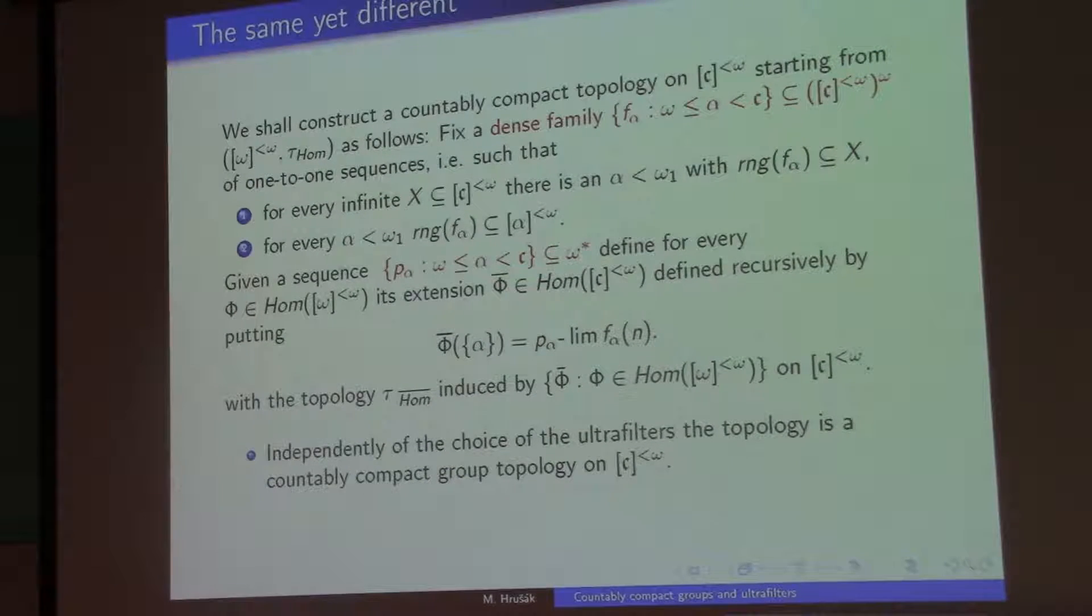So that was for p-compact. I don't necessarily want p-compact, I just want countably p-compact. What does that mean? That means I don't need to give a p-limit to every sequence, I just need sufficiently many sequences and give them possibly different p-limits for different ultrafilters. So I will try to do the same construction, but with different ultrafilters and just some sequences.